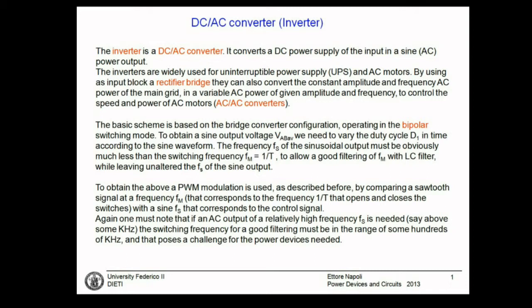The frequency of the output must be quite slow compared to the switching frequency of the bridge converter. The idea is building a sinusoidal output with a number of pulses. Here may be small pulses with a small duty cycle; here the duty cycle increases, increases even more. Here it is almost 100%, and then it reduces — not the amplitude, just the duty cycle is reduced.